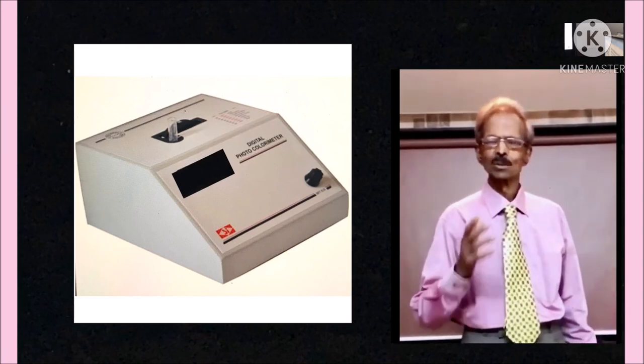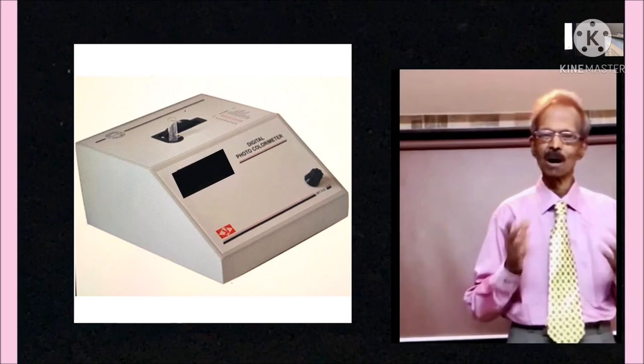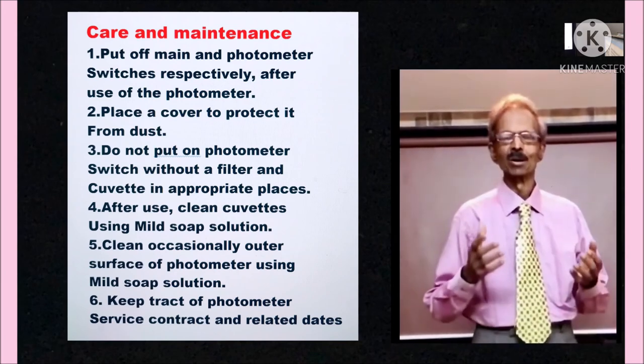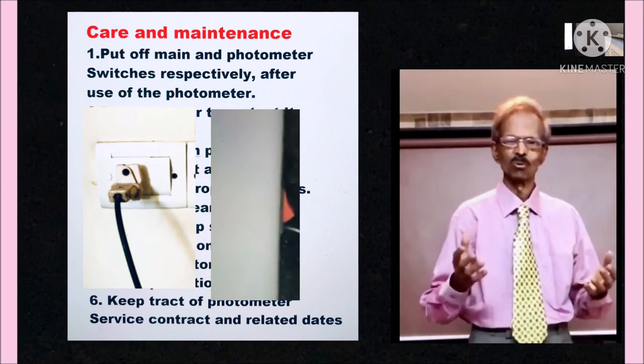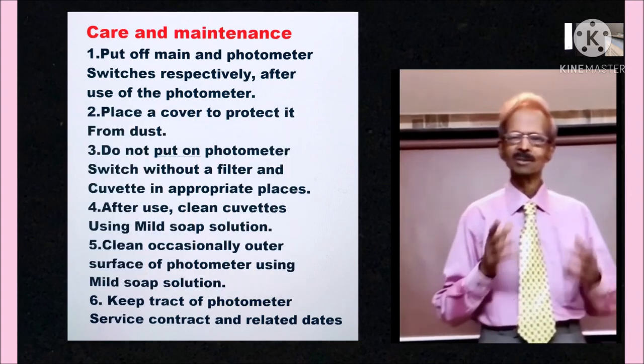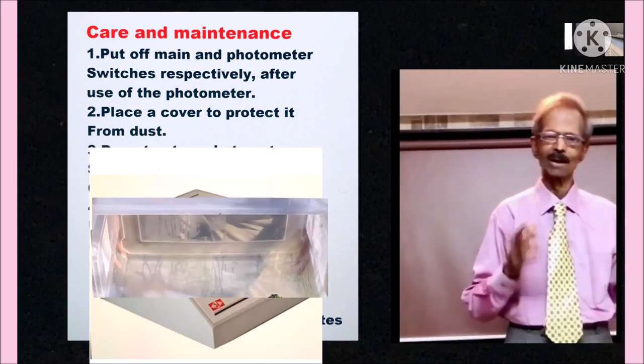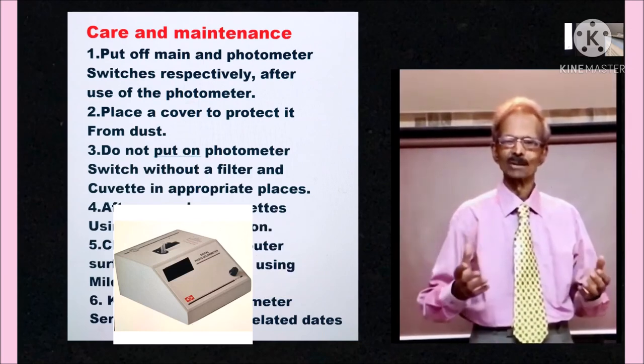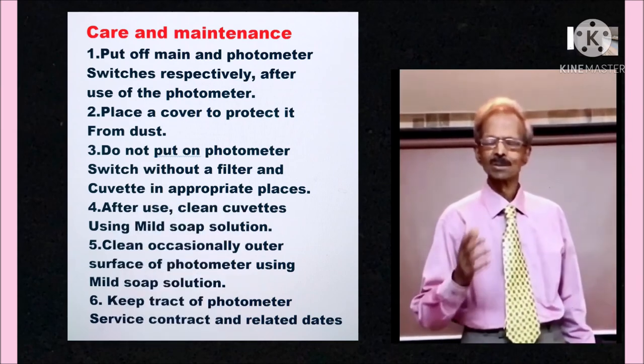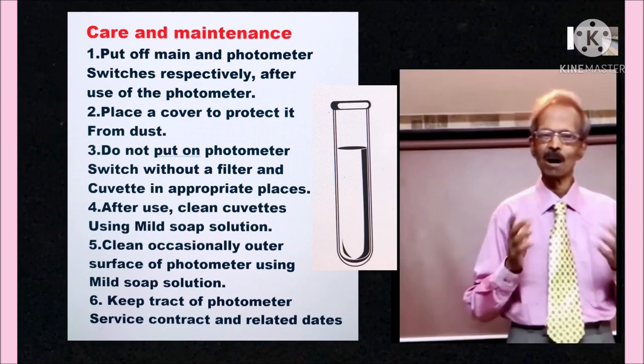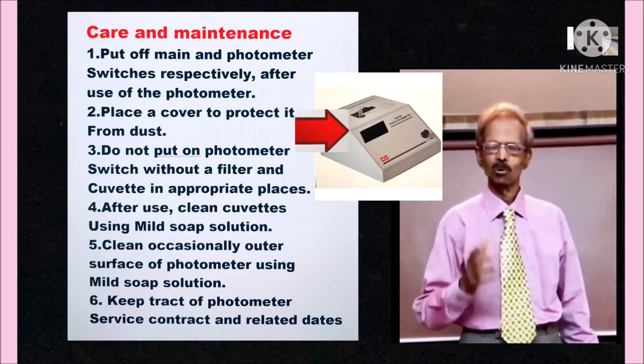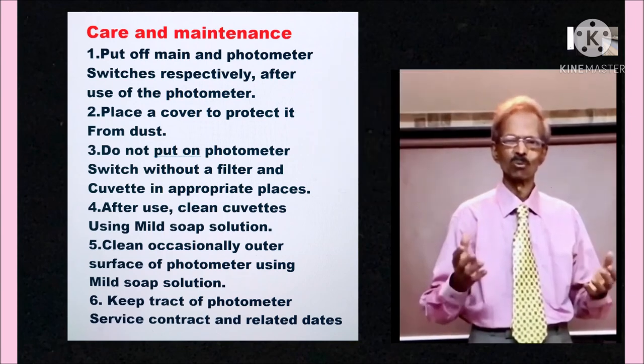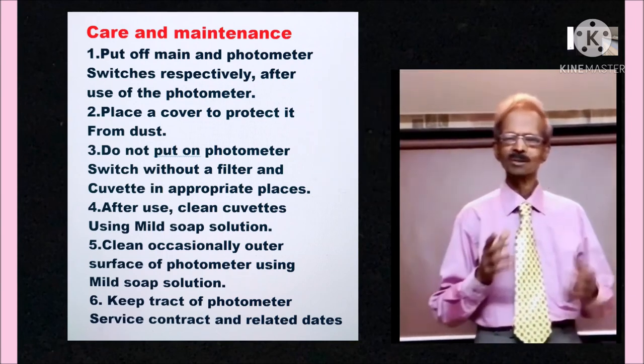Good care and maintenance is very important for photometers and spectrophotometers for their long service. These are the specific points: 1. Put off main and photometer switches respectively after use. 2. Place a cover to protect from dust. 3. Do not put on photometer switch without a filter and cuvette in appropriate places. 4. After use, clean cuvettes using mild soap solution. 5. Clean occasionally outer surface using mild soap solution. 6. Keep track of photometer service contract and related dates.